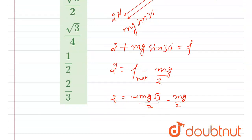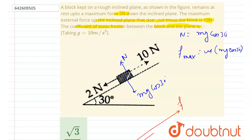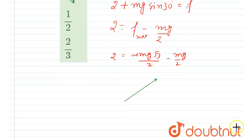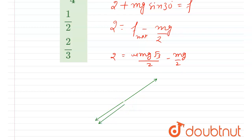In the second situation, it is said that the maximum force that can be applied up the plane so that the block does not move is 10 newton. So let's draw the diagram again. We are applying the force up the plane at maximum, so in this case the friction force will act down the plane, and mg sin θ also acts down the plane. mg sin 30° = mg/2.